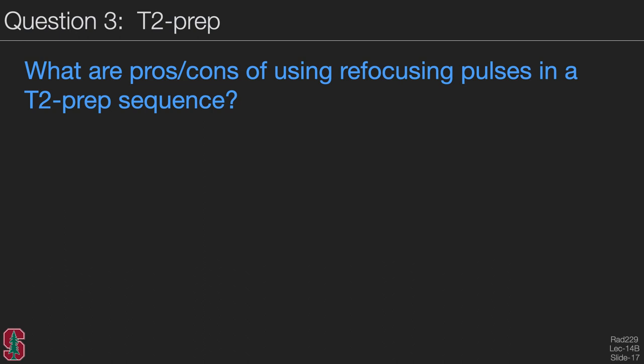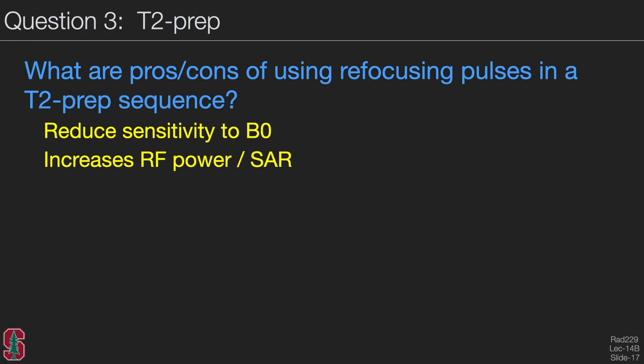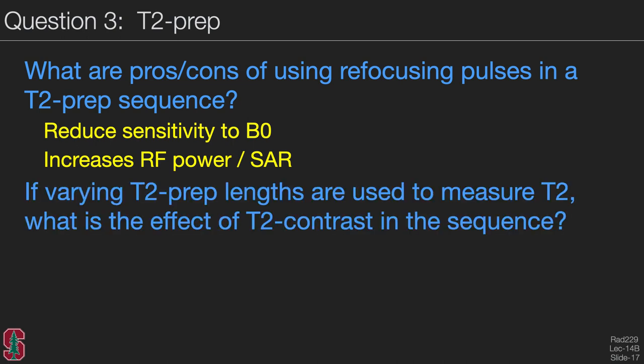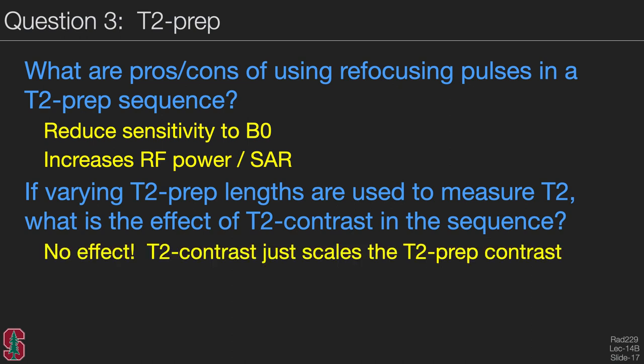For the T2 prep question: the pros and cons of using 180-degree refocusing pulses in T2 prep are that the advantage is reduced sensitivity to static magnetic field inhomogeneities, while the negative side is increased RF power or SAR. Regarding using varying T2 prep lengths to measure T2, the T2 contrast inherently in the sequence will generally have no effect—it will just scale the T2 prep contrast—so ideally this can be done regardless of the imaging sequence used, and the background contrast can cancel out when measuring T2.